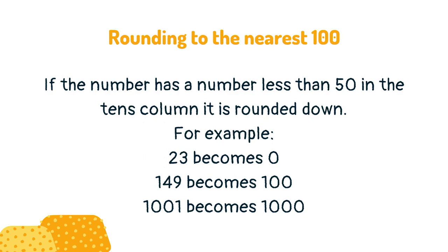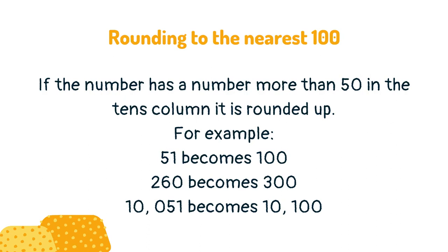If the number has a number less than 50 in the tens column, it is rounded down. If the number has a number more than 50 in the tens column, it is rounded up.